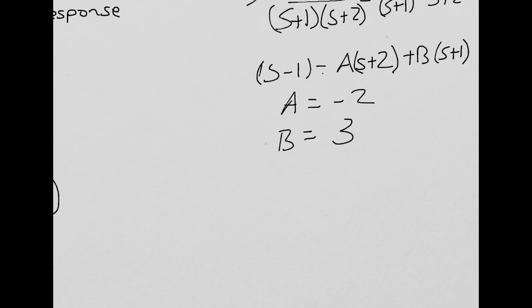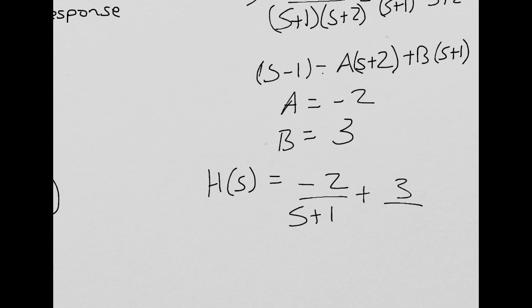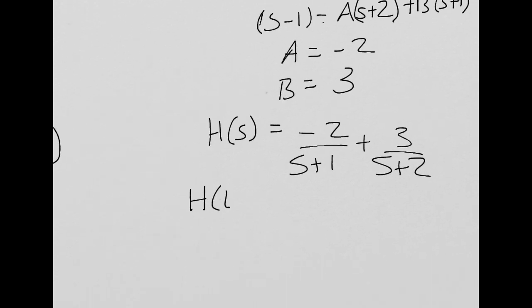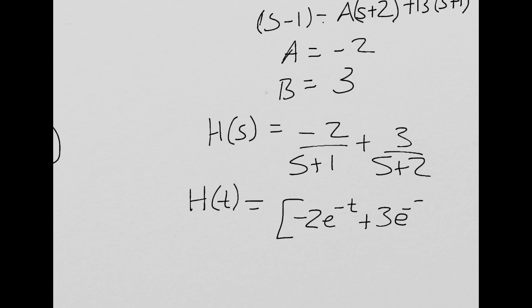So H(s) = −2/(s + 1) + 3/(s + 2). Taking the inverse Laplace transform, the impulse response h(t) = (−2e^(−t) + 3e^(−2t)) u(t).